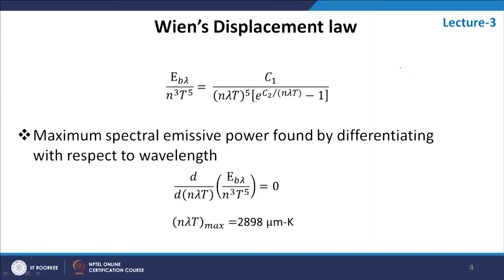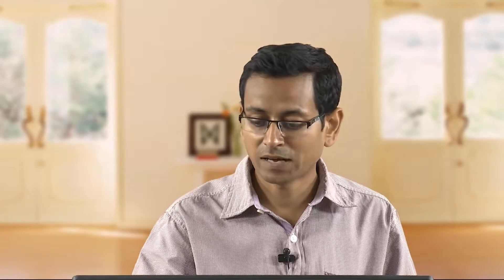Now let us go to the first fundamental law of radiation — Wien's displacement law. In our previous lecture, we developed the relation for blackbody emissive power in a parameterized form; the parameter was nλT. As a function of nλT, we discussed the Planck's blackbody emissive power, E_bλ, which gives the total amount of energy emitted by a blackbody at a given wavelength. C₁ and C₂ are the first and second radiation constants.